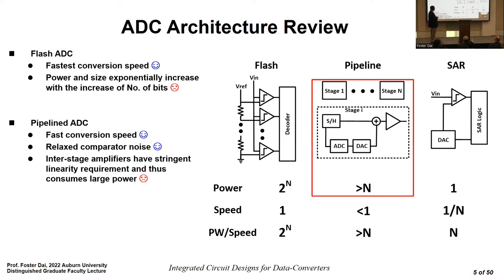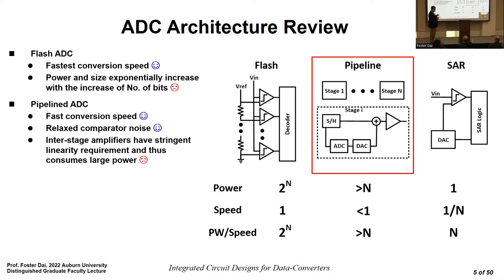The second architecture is the pipeline ADC, which splits the number of bits into multiple stages so data conversion is performed simultaneously across stages, achieving faster speed. An inter-stage amplifier amplifies the residual voltage, relaxing the noise requirement for the following stage. However, this inter-stage amplifier consumes lots of power due to its stringent linearity requirement.